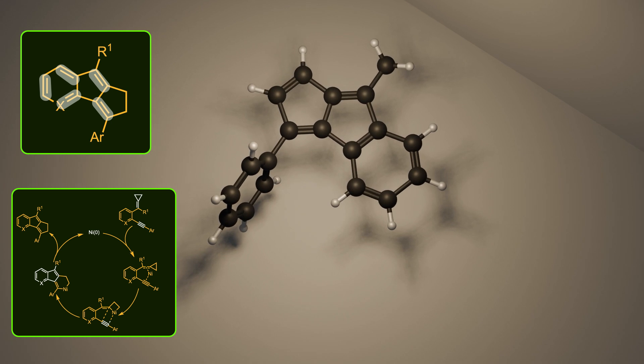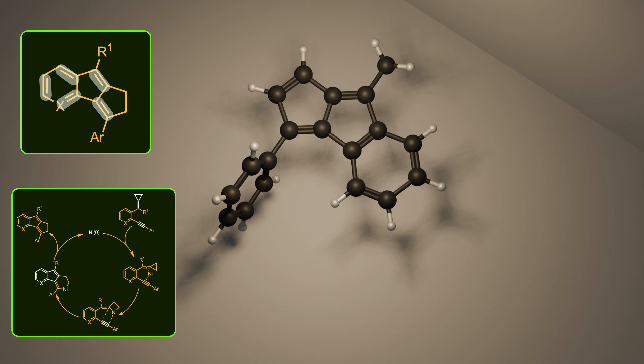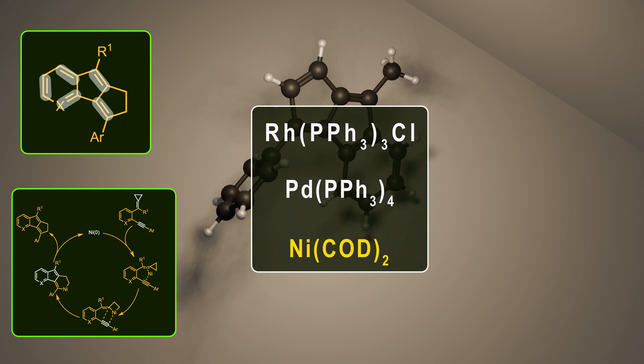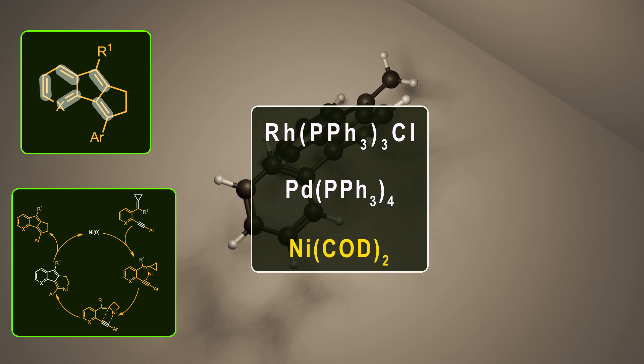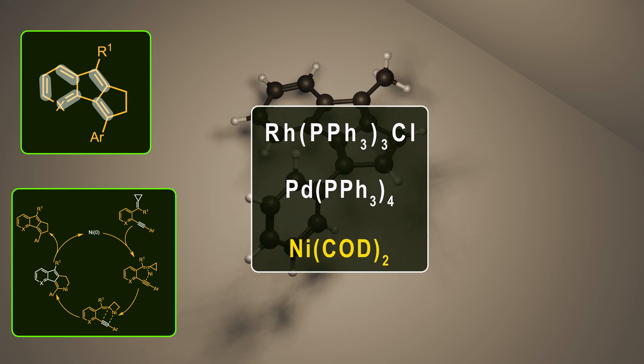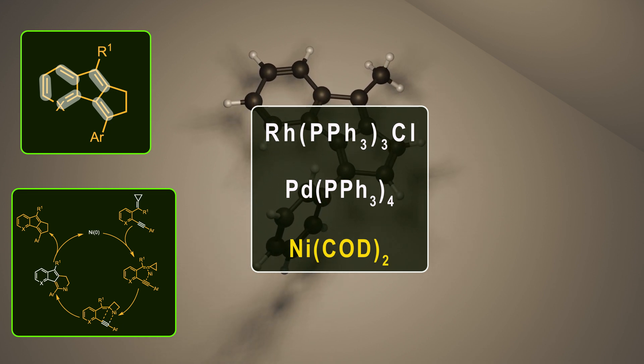Another interesting aspect of the reaction is the choice of nickel as a catalyst. Testing various transition metals like palladium and rhodium revealed that only nickel can produce the desired product with high yield. Nickel has a rich history, which is why I created a video about this fascinating transition metal. Check out this video to gain a deeper understanding of nickel.